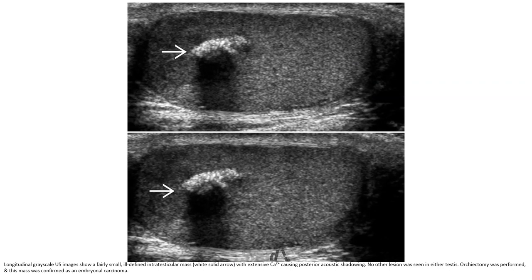This ultrasound shows a fairly small, ill-defined intratesticular mass with extensive calcification causing posterior acoustic shadowing. No other lesions were seen in either testis. Orchiectomy was performed and this mass was confirmed as an embryonal carcinoma.